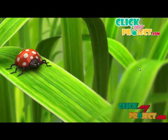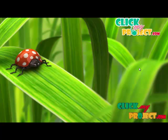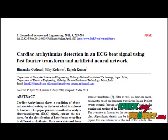Welcome to ClickMyProject.com. Let's discuss the project about cardiac arrhythmias detection in an ECG beat signal using fast Fourier transform and artificial neural network. In this paper, fast Fourier transform has been used to identify features from an ECG signal.